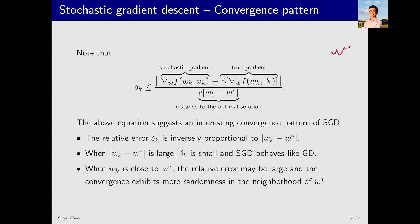Suppose this is w* at this point. w_k is far from w*. The denominator is relatively large. If the numerator is finite, the relative error is small. This means that the stochastic gradient is close to the true gradient. And in this case, SGD is very similar to GD. It will approximately move in the direction of w*.